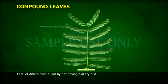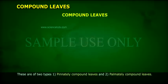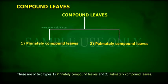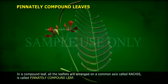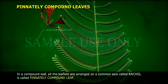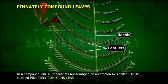A leaflet differs from a leaf by not having an axillary bud. Compound leaves are of two types: one, pinnately compound leaves, and two, palmately compound leaves. In a pinnately compound leaf, all the leaflets are arranged on a common axis called the rachis.